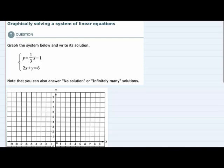In this question we are graphically solving a system of linear equations. We have two linear equations. I'm going to start with the first one, which is in the form y equals mx plus b. In this form we can see that m is one-third and b is minus one.